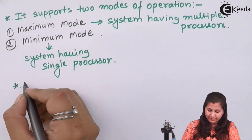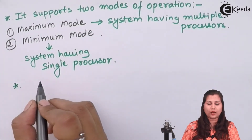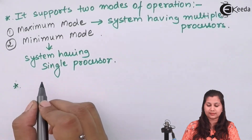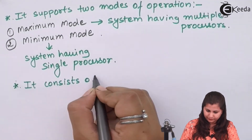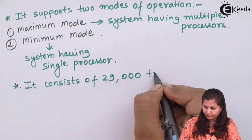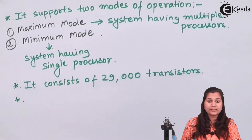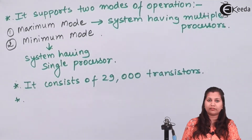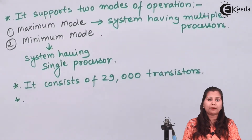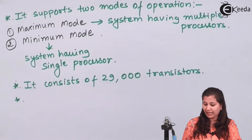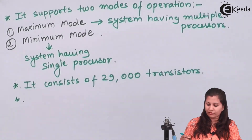The 8086 microprocessor consists of 29,000 transistors. It also has 256 vectored interrupts. In the 8085, the number of interrupts was limited, whereas in the 8086 there are 256 vectored interrupts.